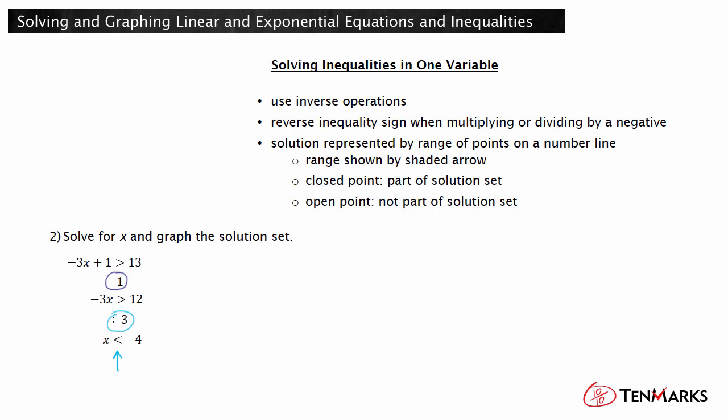Then divide both sides of the inequality by negative 3. Since both sides are being divided by a negative, reverse the inequality symbol. So the solution to the inequality is x is less than negative 4. Now let's graph it. Is negative 4 included in the solution set? There is no or equal to bar on the inequality symbol. So negative 4 is not part of the solution set. Draw an open circle.